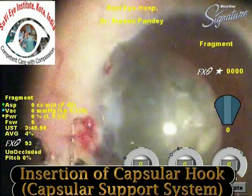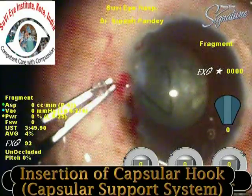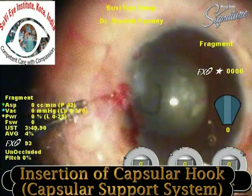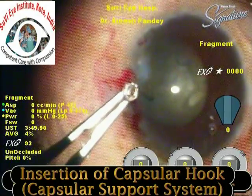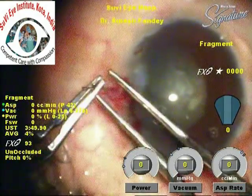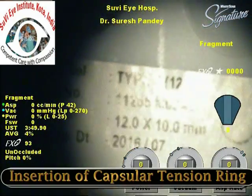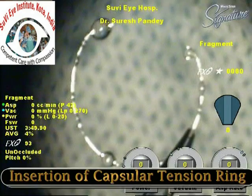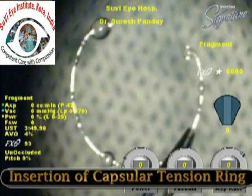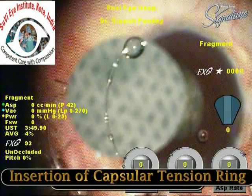The hydrodissection must be very gentle. We are now inserting a capsular hook, also known as a capsular support system. These are different from iris hooks and must be placed very gently. The capsular hooks work as artificial zonules to pull the capsular bag in the area of dehiscence and to enlarge the capsular bag for performing phacoemulsification.